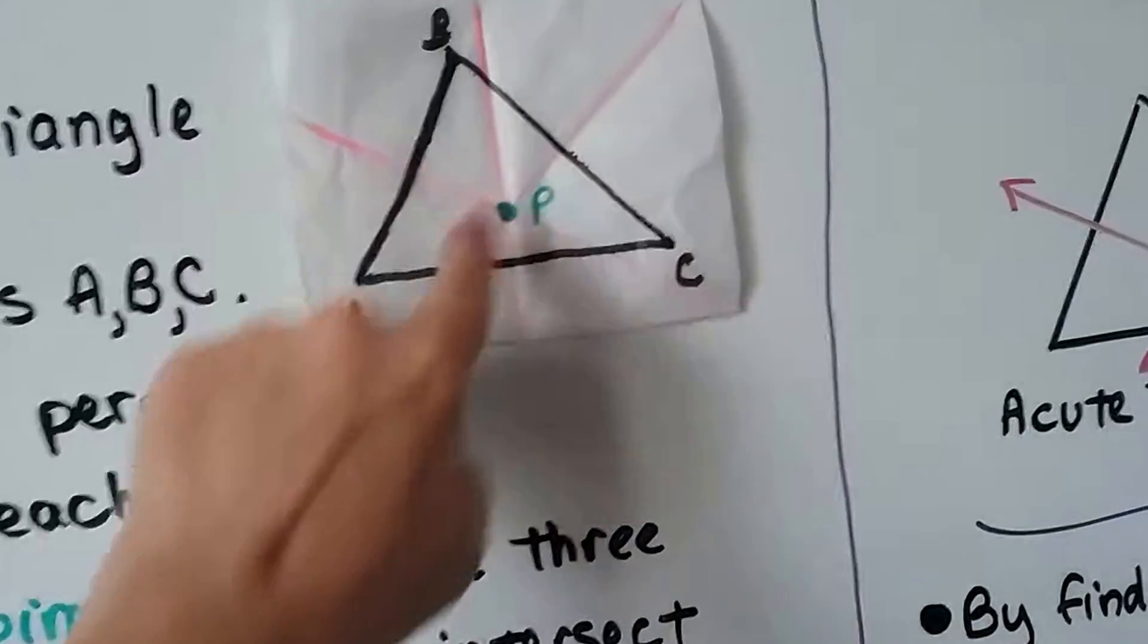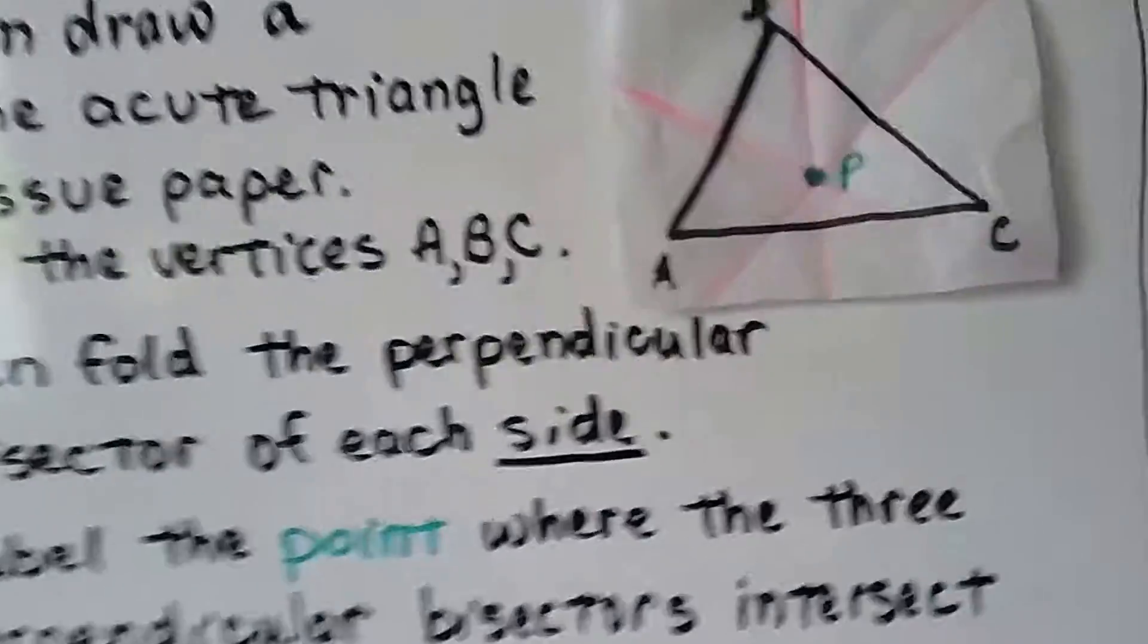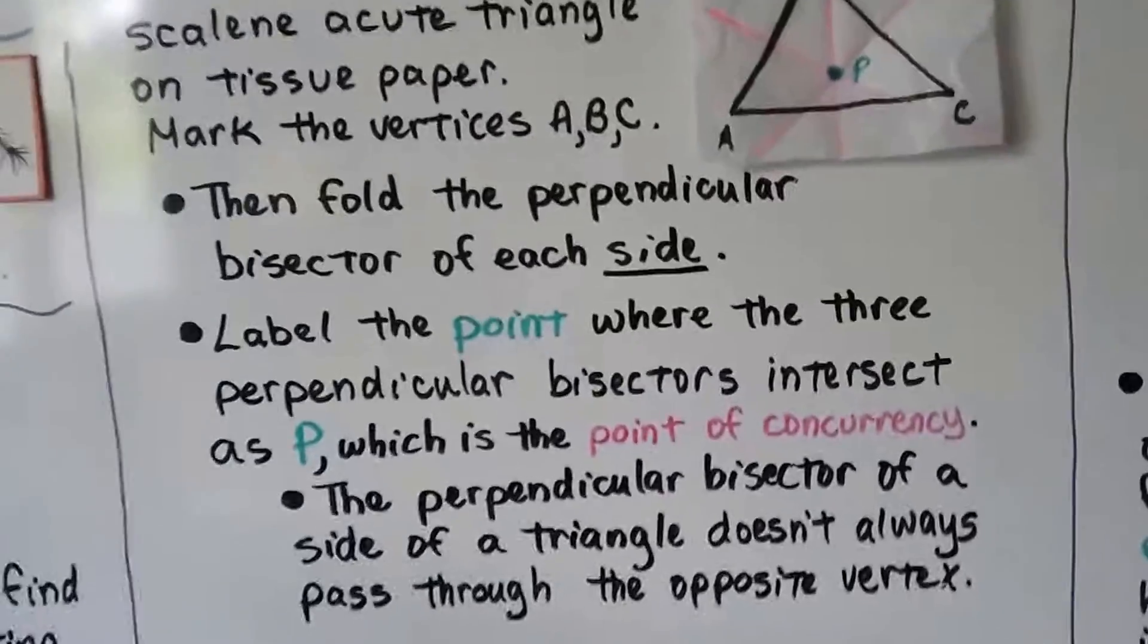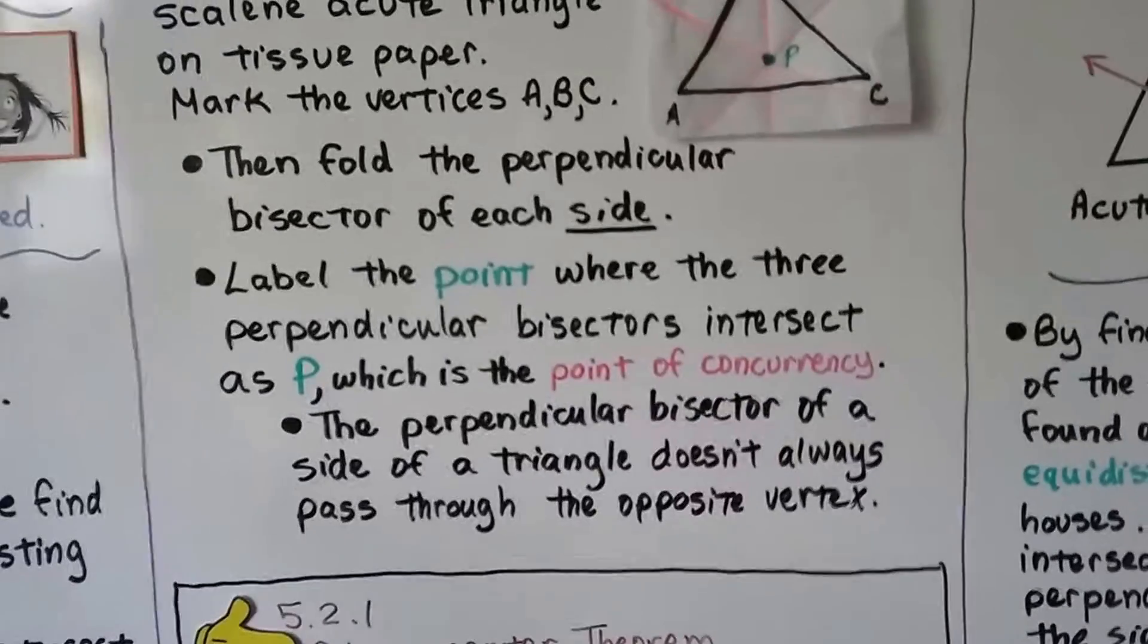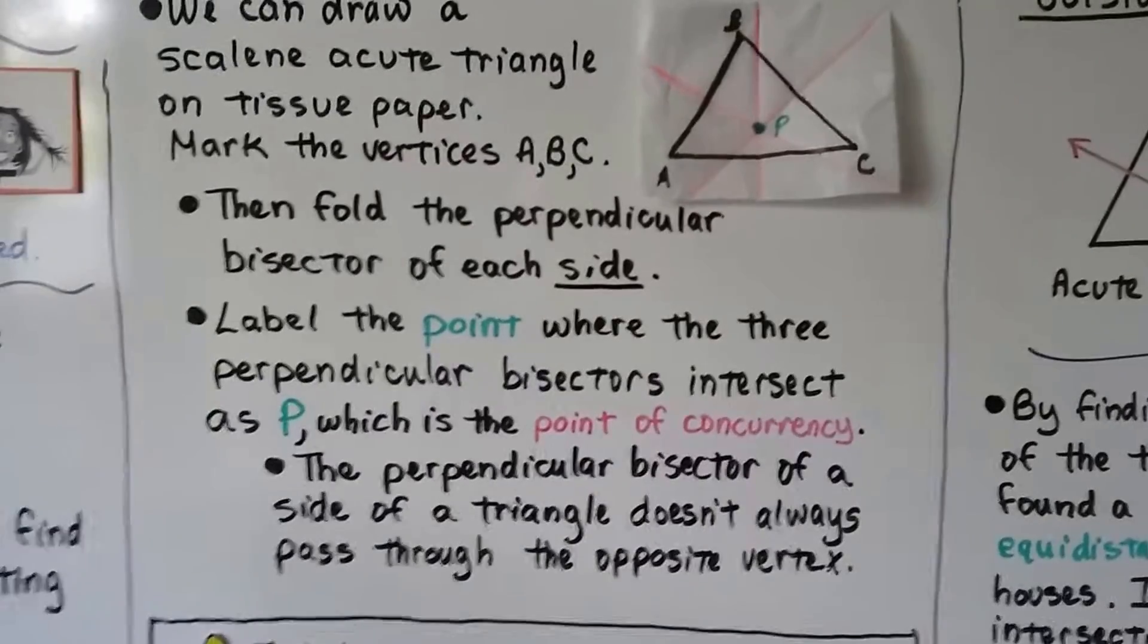And we end up with these pink lines that I highlighted where they intersect P. That's the circumcenter. We label the point where the three perpendicular bisectors intersect as P, which is the point of concurrency.